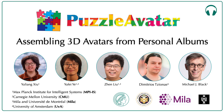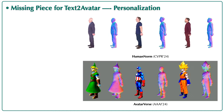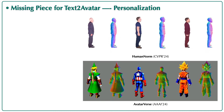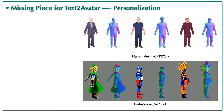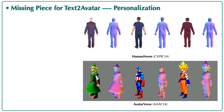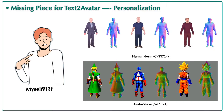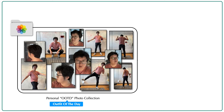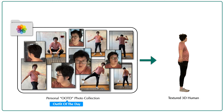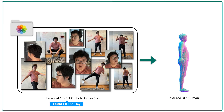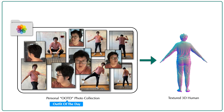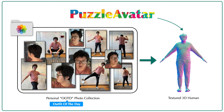We present Puzzle Avatar, which assembles 3D avatars from your personal albums. Recent text-to-avatar methods mainly generate 3D avatars for celebrities or fictional characters, but not for personalized digital twins. What if a user could get a personalized 3D avatar by just uploading their personal OOTD photos from their albums? It used to be challenging, but now you can do it with Puzzle Avatar.